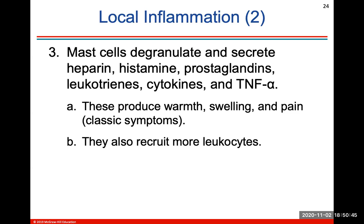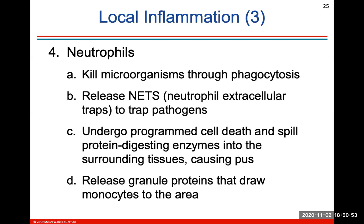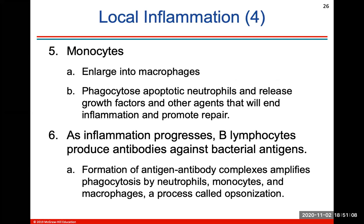It gets warmer, it swells, and there is pain associated with it. These cells might also recruit more leukocytes to that area. Neutrophils will kill microorganisms through phagocytosis and release neutrophil extracellular traps to actually trap pathogens. Monocytes will enlarge into macrophages, undergo phagocytosis of apoptotic neutrophils, and also release growth factors and other agents that will end inflammation and promote repair.